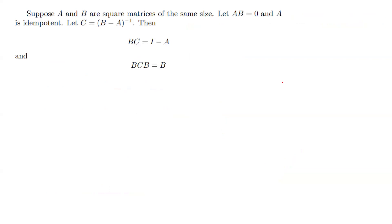Another interesting case: suppose A and B are square matrices of the same size. If AB equals zero, A is idempotent, and C equals (B minus A) inverse — meaning B minus A is invertible — then BC equals I minus A and BCB equals B. We know A is idempotent, so A times A equals A by definition.